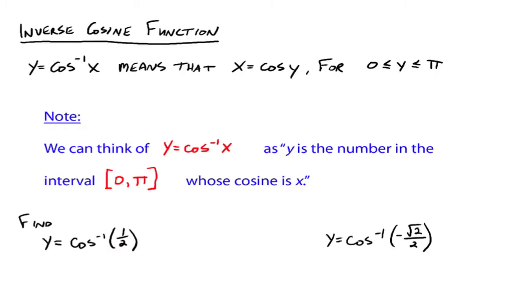Here's an example: find the arc cosine of 1 half. You're looking for a number between 0 and pi, including 0 and pi, whose cosine is 1 half. That would be y equals pi over 3 — from the unit circle, cosine of pi over 3 is equal to 1 half, and pi over 3 is definitely in the interval between 0 and pi. What about y equals the arc cosine of negative square root of 2 over 2? In the interval 0 to pi, you're in quadrants 1 and 2. The answer is 3 pi over 4, because cosine of 3 pi over 4 is negative square root of 2 over 2, and 3 pi over 4 is in the interval 0 to pi.